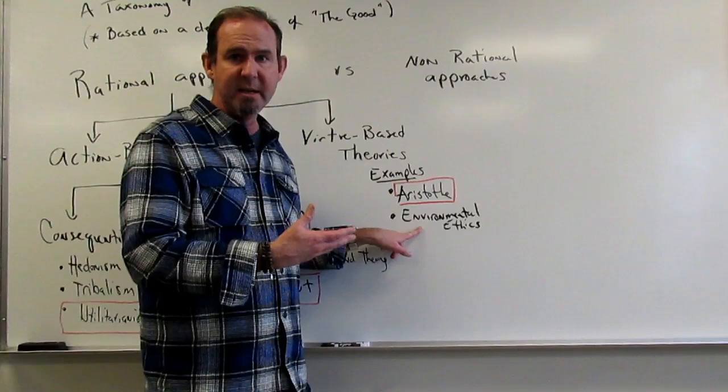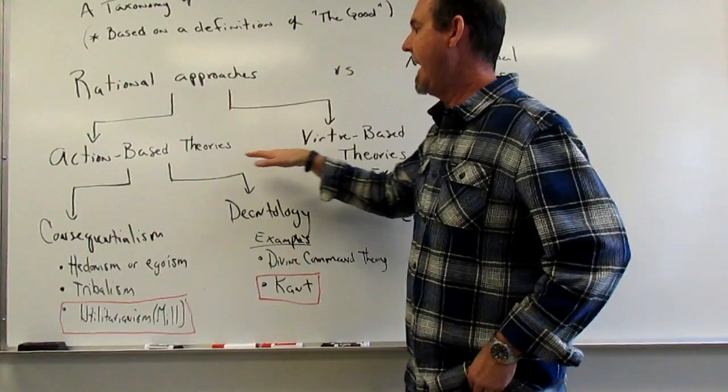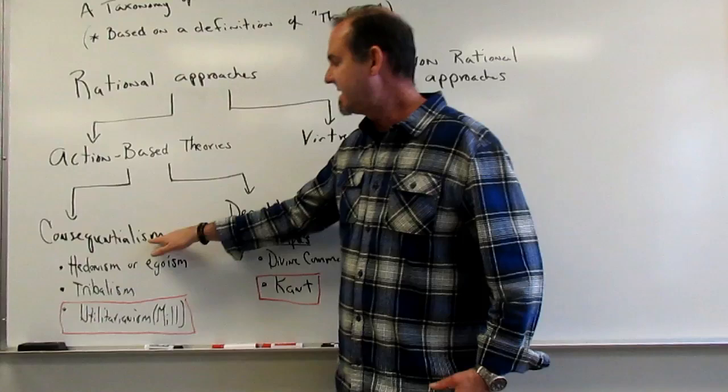By far, the majority of theories around ethics are action-based theories. Right off, we have a big distinction as far as the action-based theories go. What particular action do we want to look at to judge moral worth? Consequentialism is a great word because it's descriptive—they're looking at the consequent of your action.